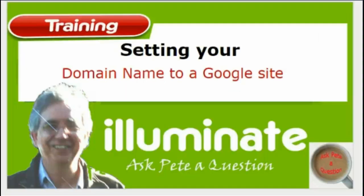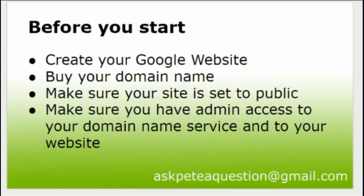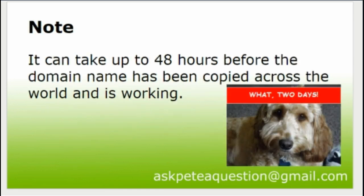Let's do a very brief recap. We started by saying we needed to create a Google website. You need to buy the domain name, make sure your site is set to public, and make sure you've got admin access to your domain name service and to your website. Note that once all these settings are in place it may still take a further 48 hours before your domain name has been replicated across the world.